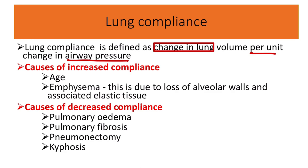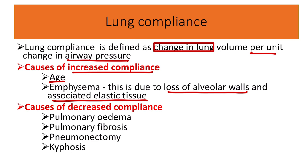Here we can see the causes of increased compliance. With age, the fibrous tissue of the lungs reduces, and lung compliance increases. In emphysema, there is loss of the alveolar wall and associated elastic tissue — elastic tissue loss, alveolar wall loss, and a bigger lung — so there is more lung compliance.